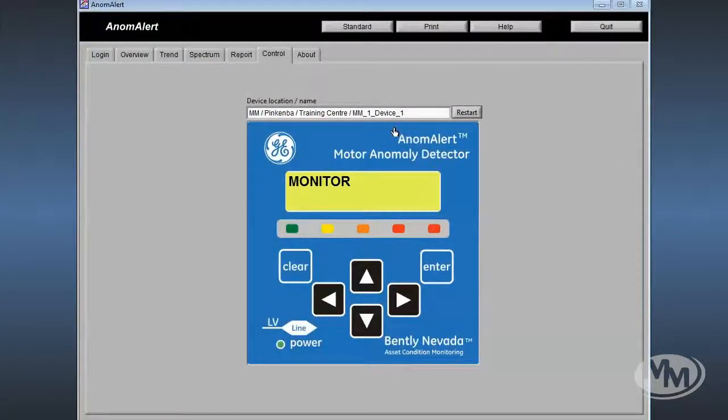This is the control tab. From here, the Anomalert unit can be directly interrogated and operated as if you were touching the front panel of the device itself. It can be seen that all of the machine parameters and settings can be adjusted and interrogated remotely.